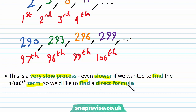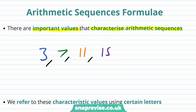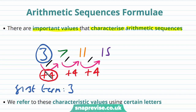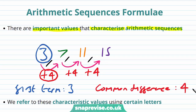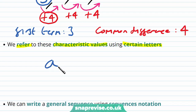Let's try and determine the arithmetic sequences formula. There are some important values that characterise arithmetic sequences. Let's say this time we start with 3, and then we have 7 as our next term, and then 11, and then 15. Again we can see that each time we are adding a constant number, and in this case this constant number is plus 4. The two important values that characterise this sequence are the first term, which is 3, and also what we call the common difference, which is plus 4. Once we know these two characteristic values we can determine the whole sequence.